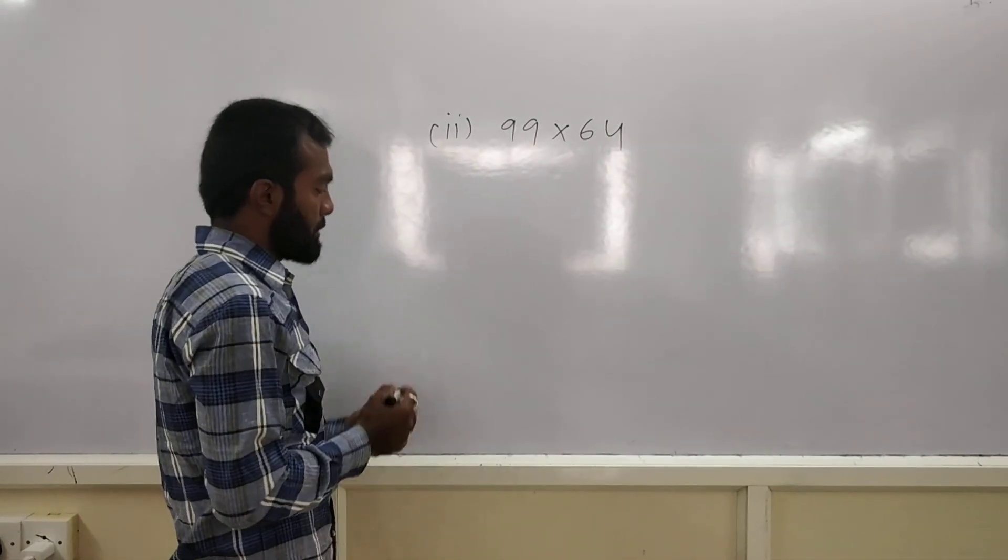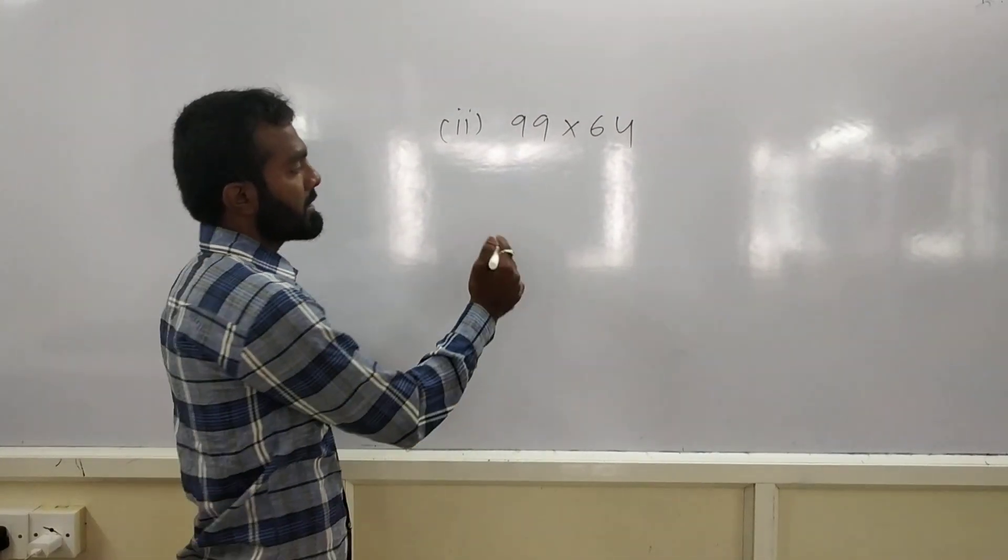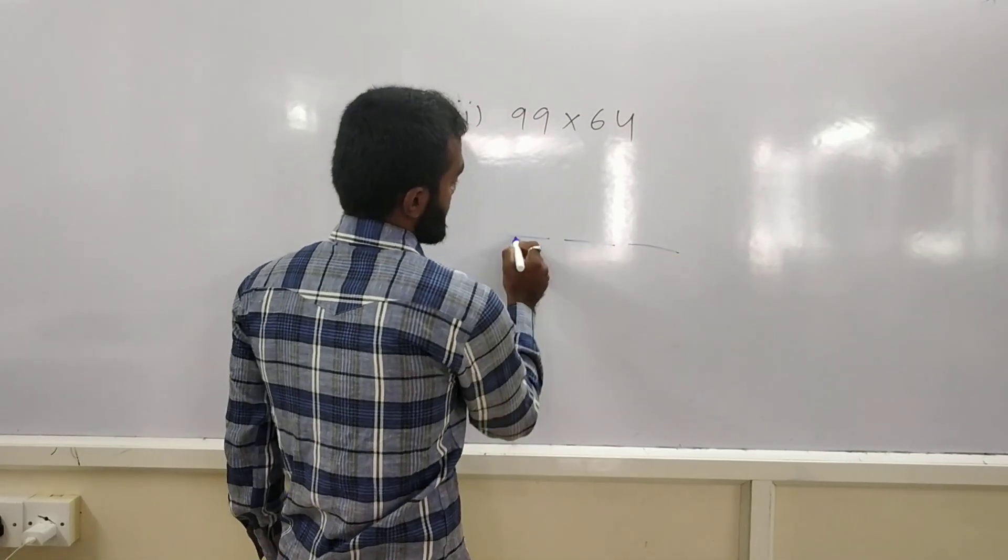How to multiply these 2 numbers? Now, whenever you are multiplying any 2 digit numbers. The first step is, just draw 3 dashes. Just draw 3 dashes.